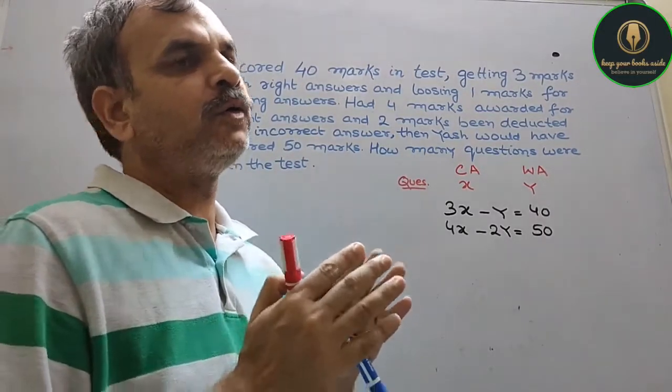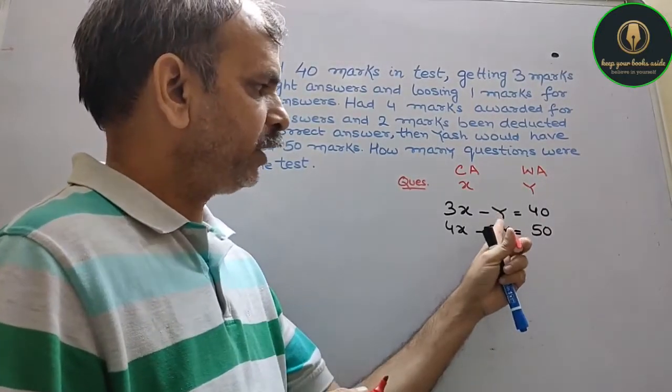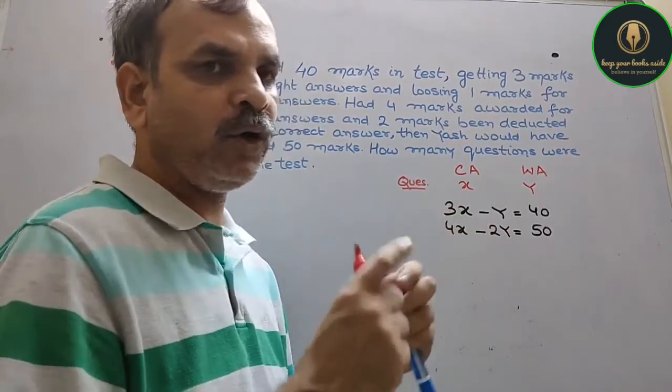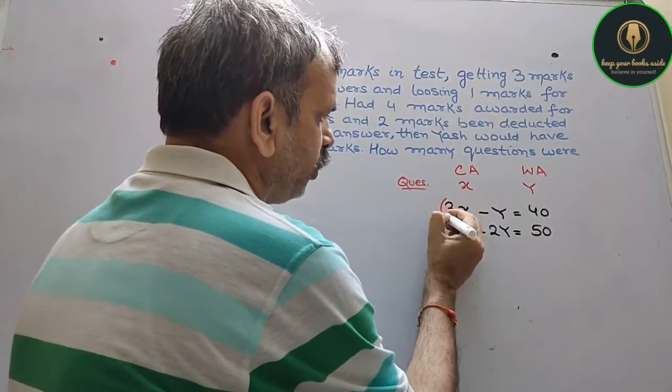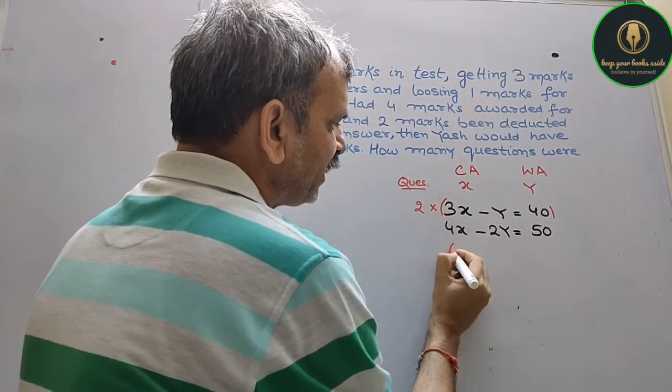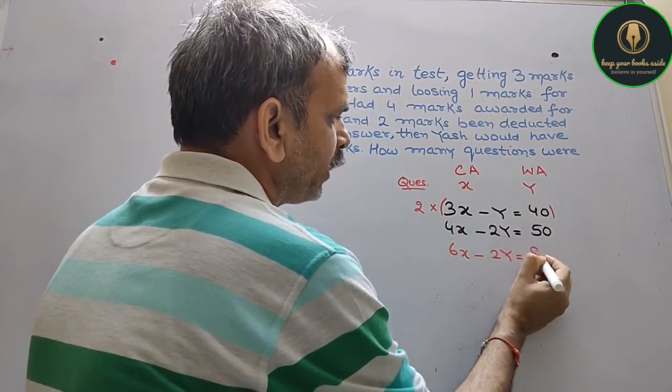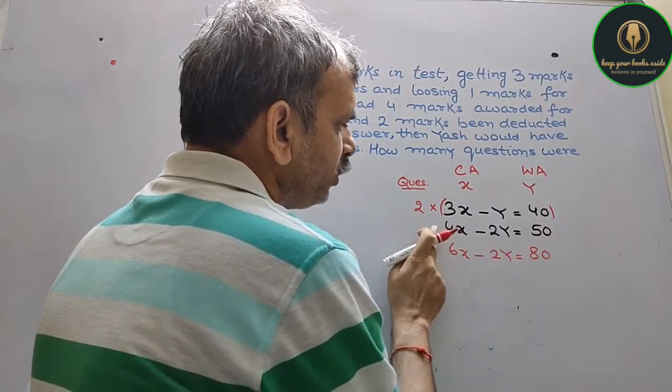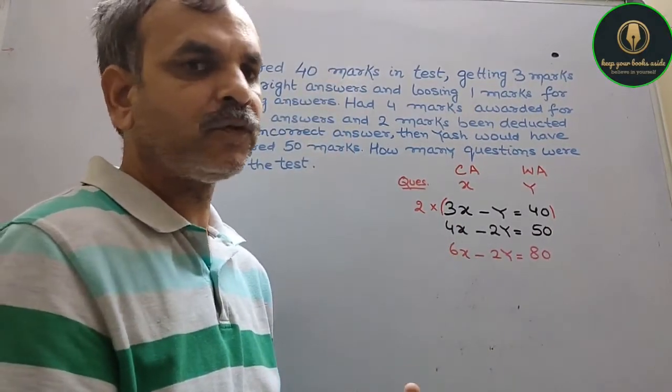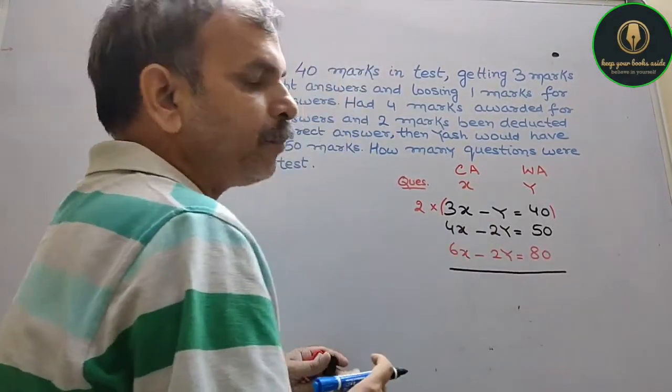Now we have to eliminate the equations. We have to make coefficients equal. We will eliminate Y, so here 2Y. We multiply first equation by 2, so 6X minus 2Y is equal to 80. These equations we have now, so now we eliminate.